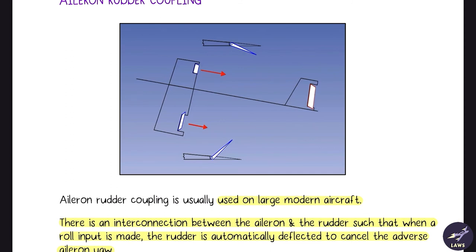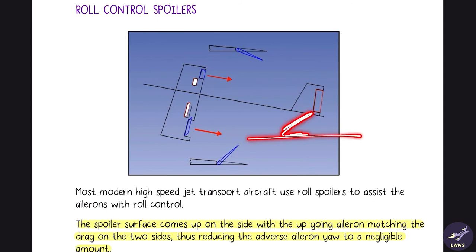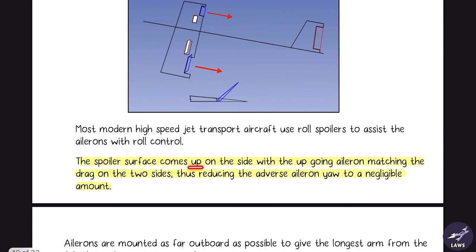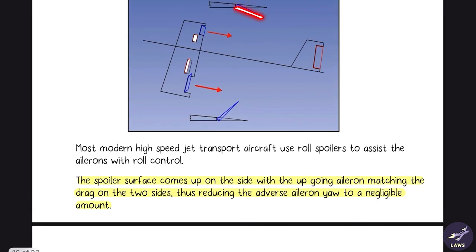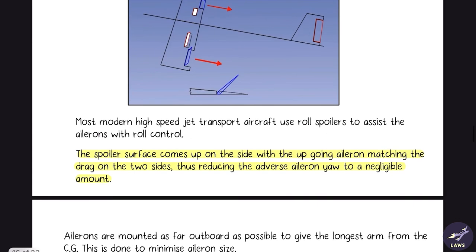Aileron-rudder coupling is used on modern aircraft — there is an interconnection between the aileron and rudder such that when a roll input is made, the rudder is automatically deflected to cancel the adverse aileron yaw. Roll control spoilers in their neutral position are flush with the wing surface and deflect upward only. The spoiler comes up on the side with the up-going aileron, increasing drag on that side to match the increased induced drag on the other side, thereby reducing adverse yaw.